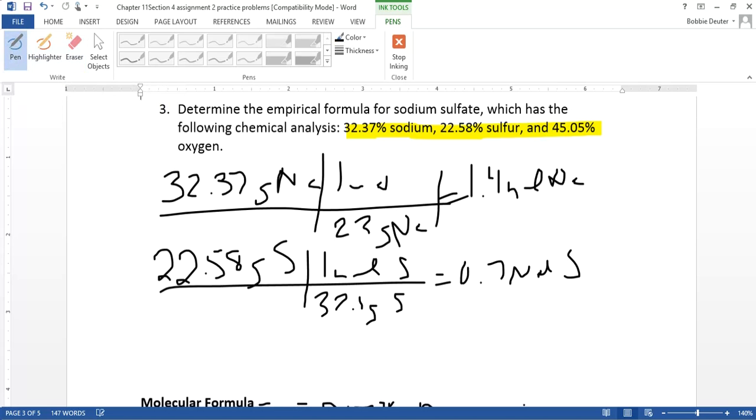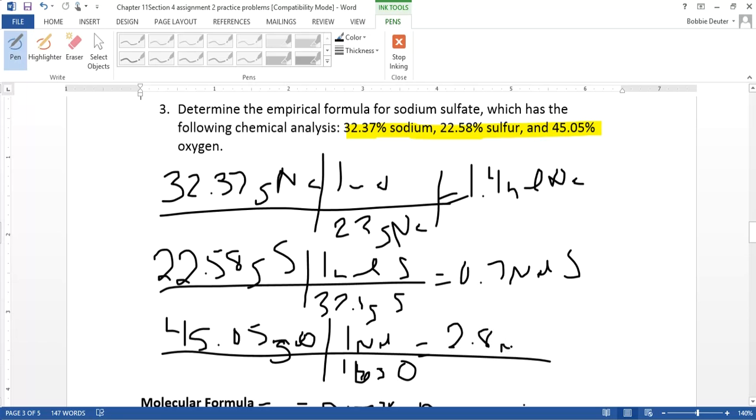Then we go to 45.05 grams of oxygen. In this case, we have 16 grams of oxygen over one mole, which would equal 2.8 moles of oxygen. Divided by the smallest...